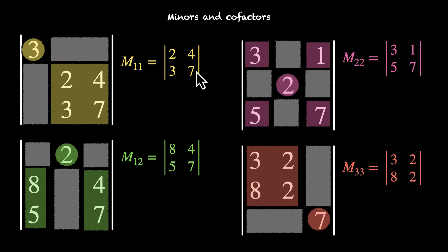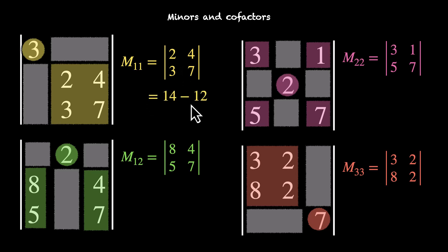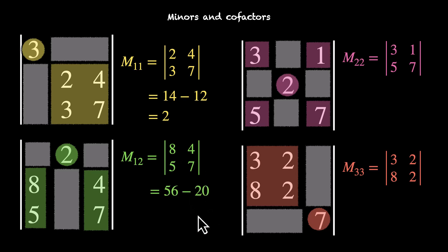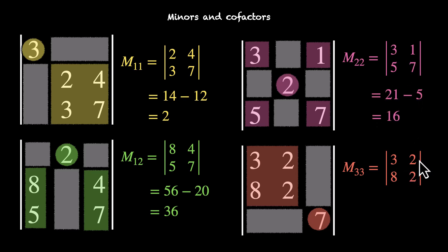We can go ahead and find the values as well. Let's find the values of these four minors. M11 is 14 minus 12, that's 2. M12 is 56 minus 20, that's 36. M22 is 21 minus 5, that's 16. And M33 is 6 minus 16, that's minus 10. With the same approach, we can find the remaining minors as well.